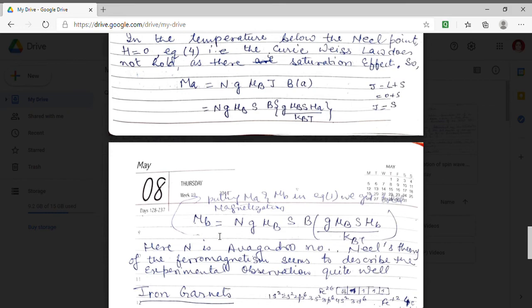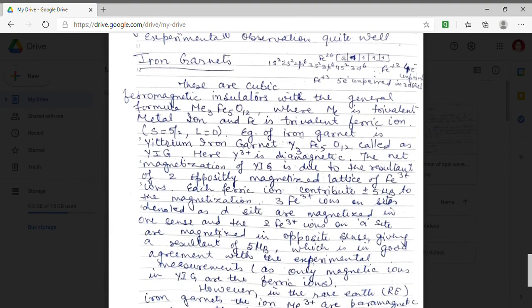Iron garnets. What are iron garnets? Iron garnets are ferromagnetic insulator. And they have general formula metal 3 Fe 5 O 12. Here ME denotes the trivalent metallic iron. And Fe it is also trivalent in nature and Fe means trivalent ferric iron.